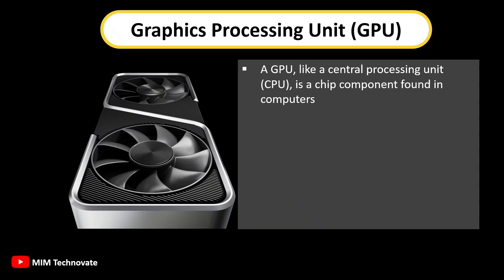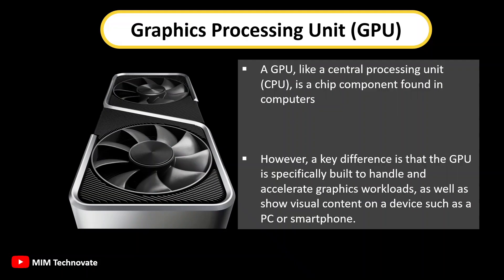A GPU, like a central processing unit (CPU), is a chip component found in computers. However, a key difference is that the GPU is specifically built to handle and accelerate graphics workloads, as well as display visual content on a device such as a PC or smartphone.